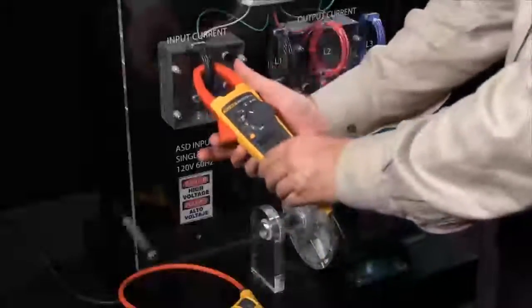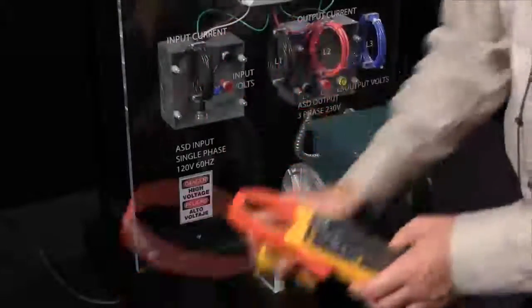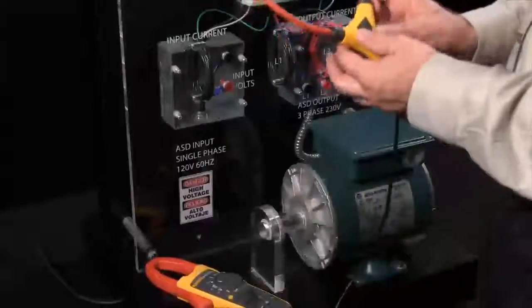There's gonna be plenty of times when you can't access a current bundle. Maybe the conductors are too large or perhaps they're too close to an enclosure to gain easy access and take the measurement. That's when the iFlex comes into play.